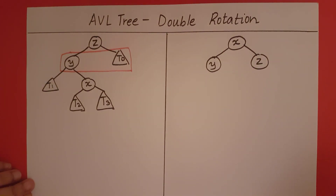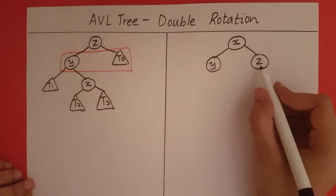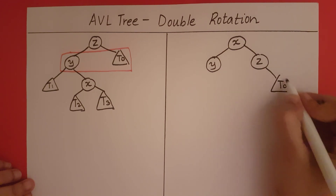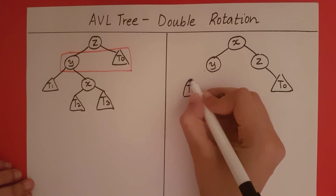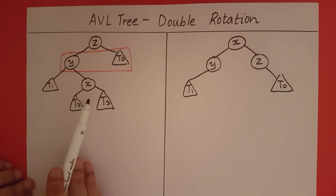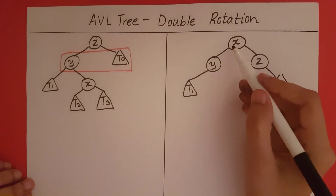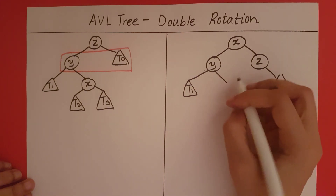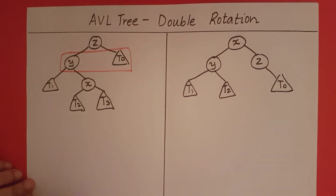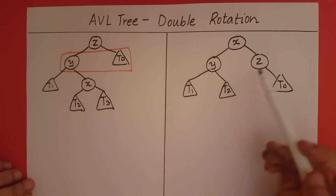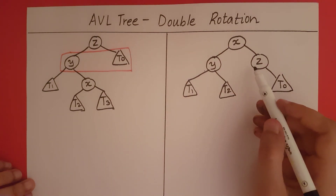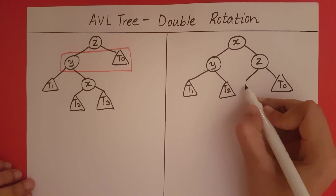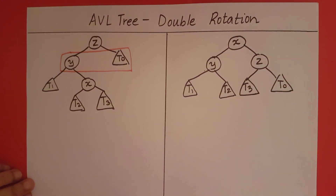Now let's look at where the subtrees go. T0 comes to the right of Z — there is space there, so I will place T0 there. There is space to the left of Y, so I can place T1 there. T2 comes to the left of X, but the left of X is full, so I need to place T2 between X and Y — the space between X and Y comes to the right of Y, so we place T2 there. T3 comes to the right of X, but that space is taken, so T3 occurs between X and Z. That is how you perform this rotation.